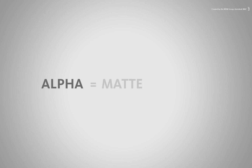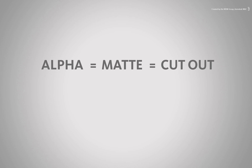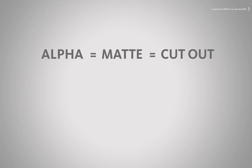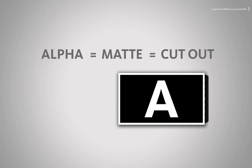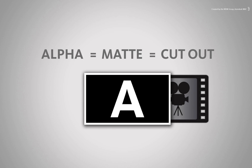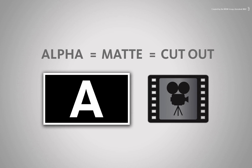You might also hear me refer to alpha as a matte or cutout. This is because over time, the alpha channel has been known by these names because of how they were created for traditional film and video formats. That's just a bit of extra knowledge for you to digest.